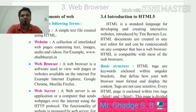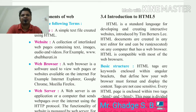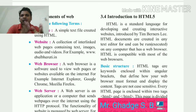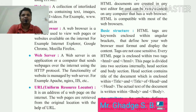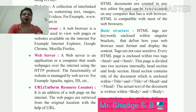The next term is web browser — software used to view web pages or websites available on the internet. Examples include Google Chrome, Mozilla Firefox, and Internet Explorer. A web browser is used to access the internet and web pages. The next term is web server — an application or a computer that sends web pages over the internet using the HTTP protocol. Examples of web servers include Apache, NGINX, and IIS.